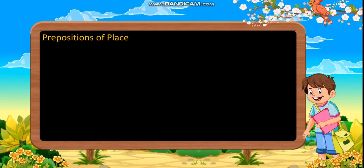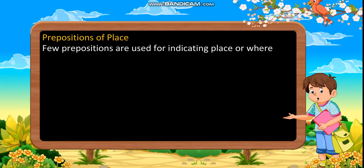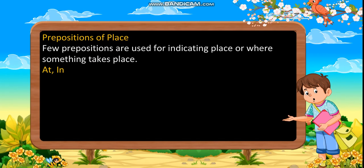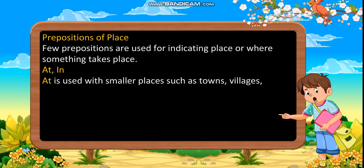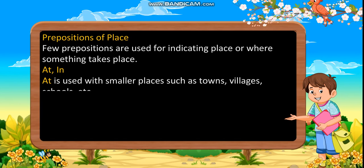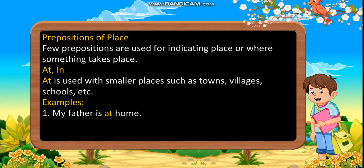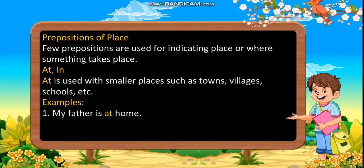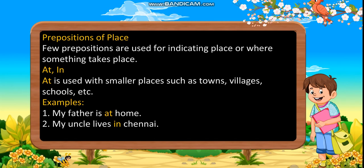Prepositions of place. Few prepositions are used for indicating place or where something takes place: at, in. At is used with smaller places such as towns, villages, schools, etc. Examples: first, my father is at home. Second, my uncle lives in Chennai.